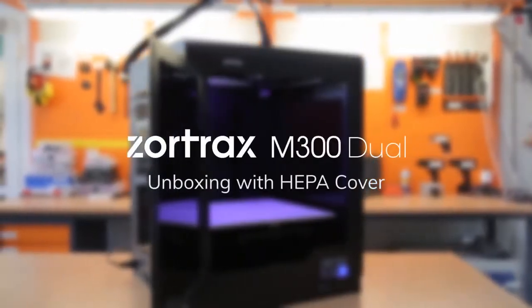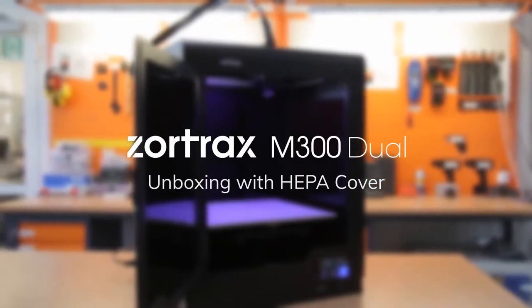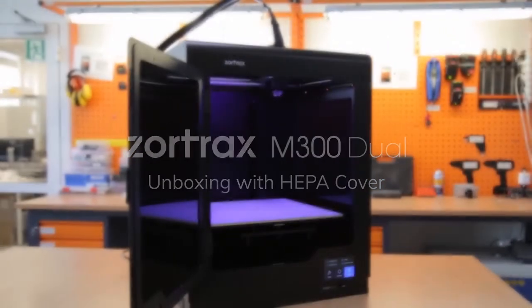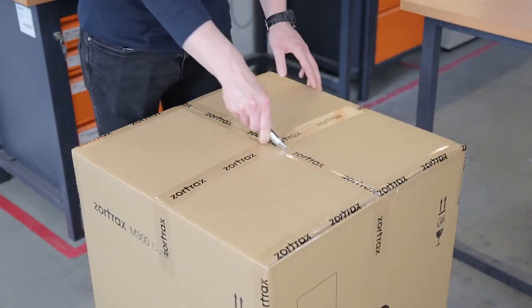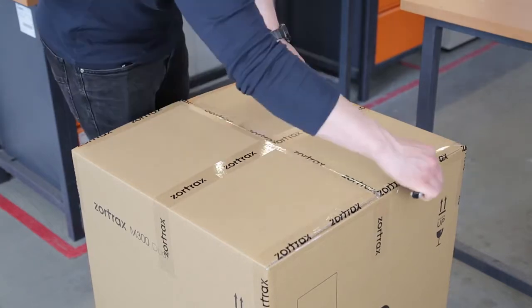Zortrax M300 DUAL is a large volume 3D printer that can simultaneously print with base and water-soluble support filament. In this video, we'll instruct you on how to properly remove the device out of its box and prepare it for first use. You'll also see how to set up the HEPA cover.